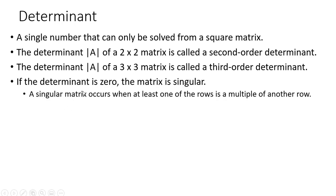If the determinant is zero, the matrix is singular. A singular matrix occurs when at least one of the rows or columns is a multiple of another row or another column.